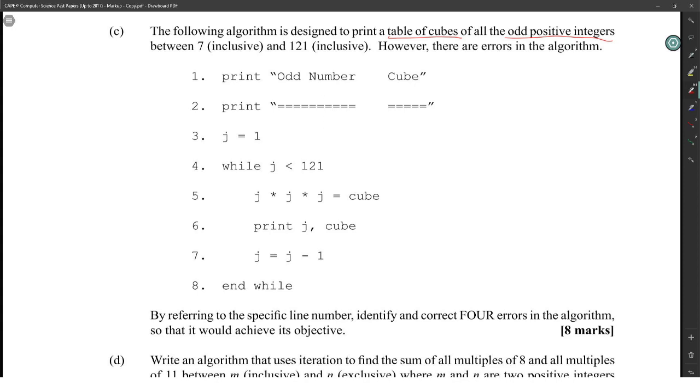J is equal to 1. Now, J is considered to be an odd number so it should print out a cube of J at the start. So J starts at 1. Now, it's supposed to be between 7 and 121 inclusive. If it's supposed to be inclusive at 121, that means this is supposed to be J is less than or equal to 121 to make sure it's inclusive. So line 4 is definitely the first error that we could see there. And what will happen here is J by J by J will end up printing out but this is just going to print out 1 by 1 by 1. So J is supposed to start at 7. J should be equal to 7 instead.